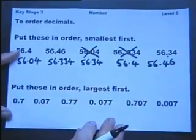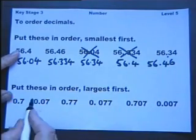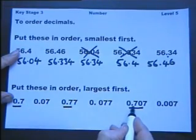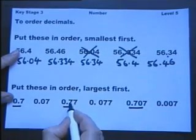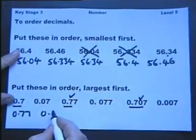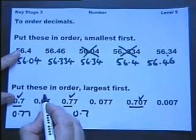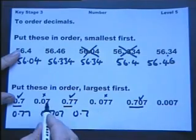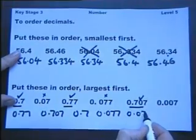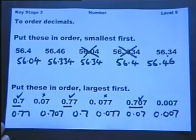Now let's put these in order largest first. We have several numbers starting with 0.7. Among those, the largest comes first, followed by the next, then the smallest of the 0.7 group. Then the two numbers beginning with 0.07 follow, with the larger of those before the last. That covers putting decimals in order either largest first or smallest first.